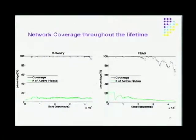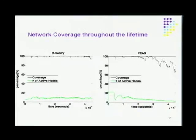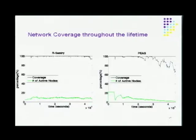The results show that along the timeline, the number of active nodes in R-Century remains pretty much constant, whereas in PEACE there are ups and downs. The direct effect is that R-Century can keep the coverage ratio at approximately 95%, whereas PEACE fails to keep the coverage ratio at a satisfactory level because it fails to maintain a constant number of active nodes.